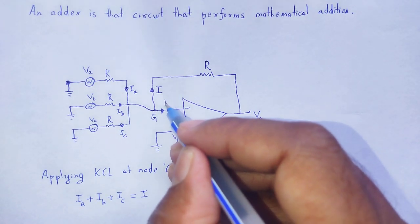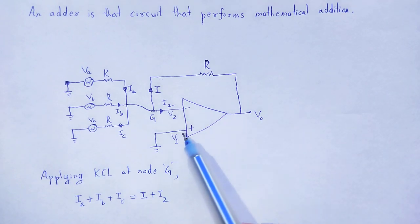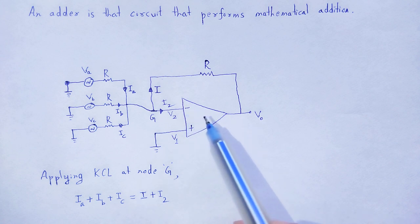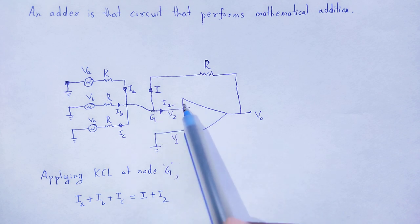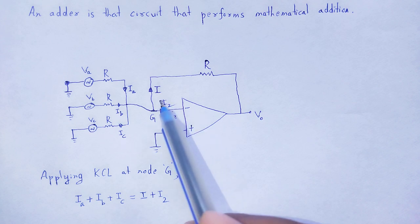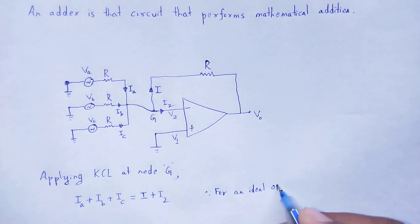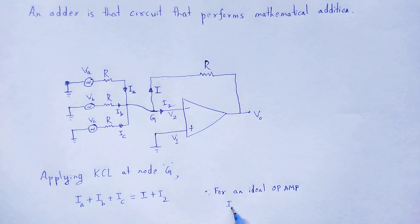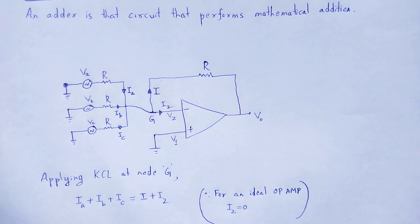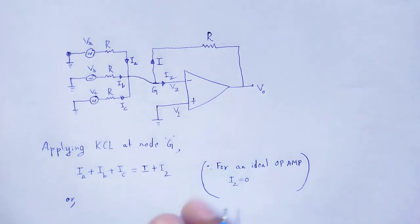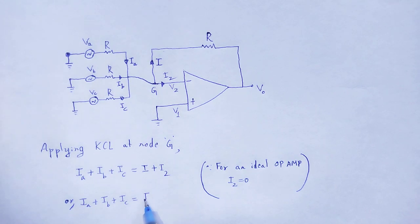The current through this op-amp is let I2. As you know, in the case of an ideal op-amp, it provides infinite input impedance, therefore no current flows through the op-amp. Therefore, I2 will be 0 for an ideal op-amp. So the expression becomes: I-A plus I-B plus I-C is equal to I.